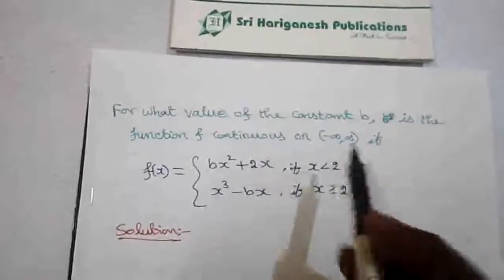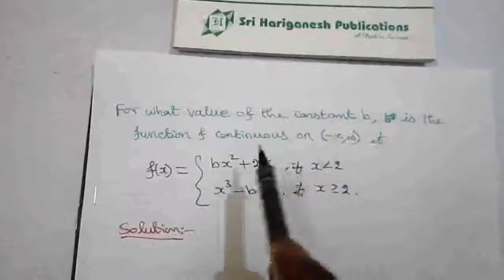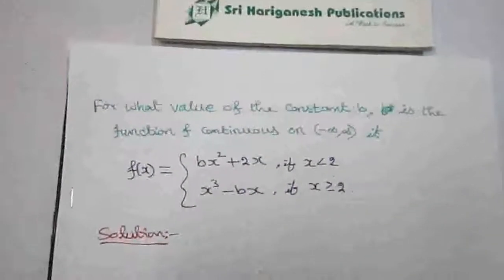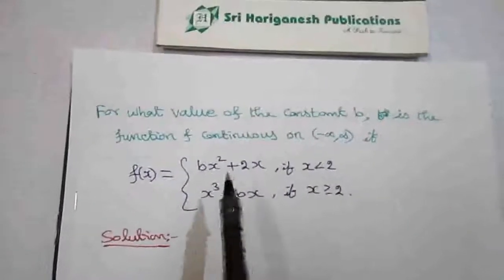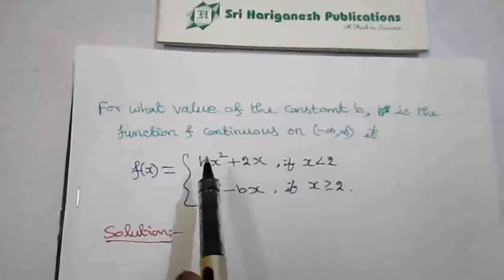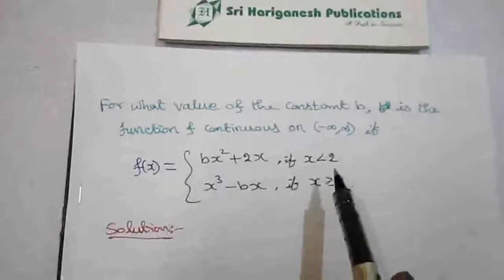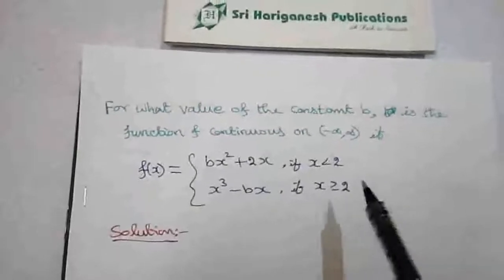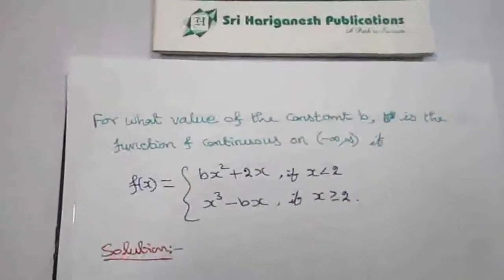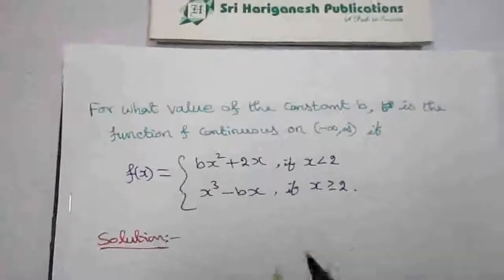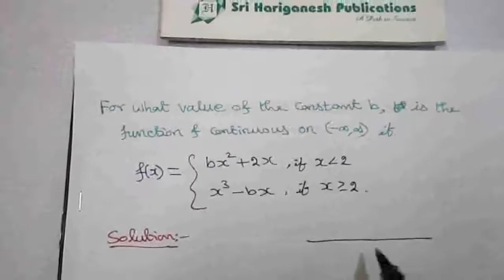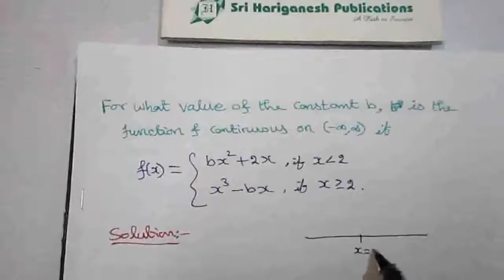We have to find the value of b such that the function is continuous on minus infinity to plus infinity. From the definition of continuity, the left limit and right limit at x equal to 2 must be equal. To find the left and right limits, we consider the point x equals 2.